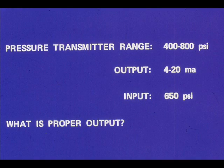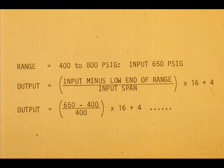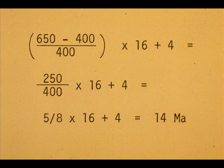We will use the formula to calculate the milliamp output for a 650 PSIG input. By substituting in the formula, we have 14 milliamps as the answer.